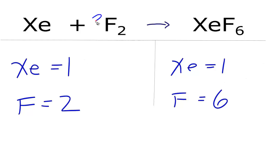If we put a three in front of the fluorine, two times three equals six. That would mean there are six fluorines on each side. We didn't change the xenons. There's still one. And this equation is balanced.